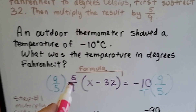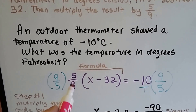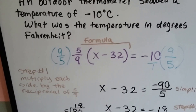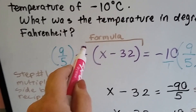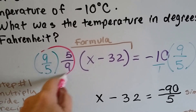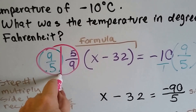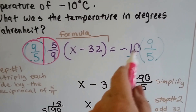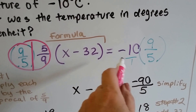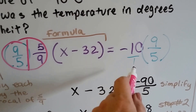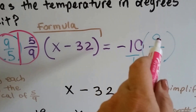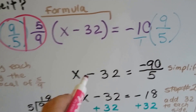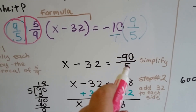Because there's a fraction here, the first thing we're going to do is multiply both sides by its reciprocal, 9 fifths. That's step one. 9 times 5 is 45, and 5 times 9 is 45, so that creates 45 over 45, which is 1 — so we can ignore that. Now we have to multiply the right side by 9 fifths. We put a little 1 underneath the 10 to make it a fraction. Negative 10 times 9 is negative 90, and 1 times 5 is 5. So now we have x minus 32 equals negative 90 over 5.